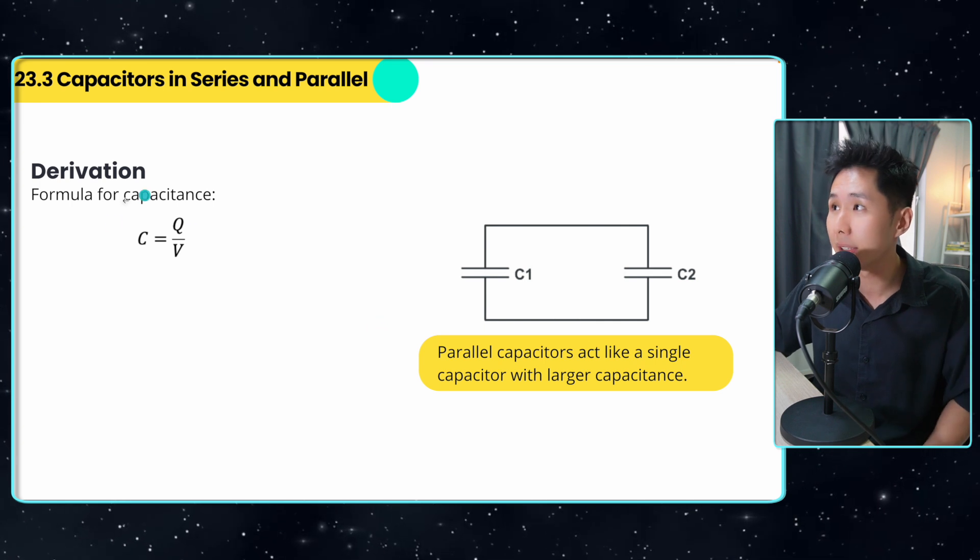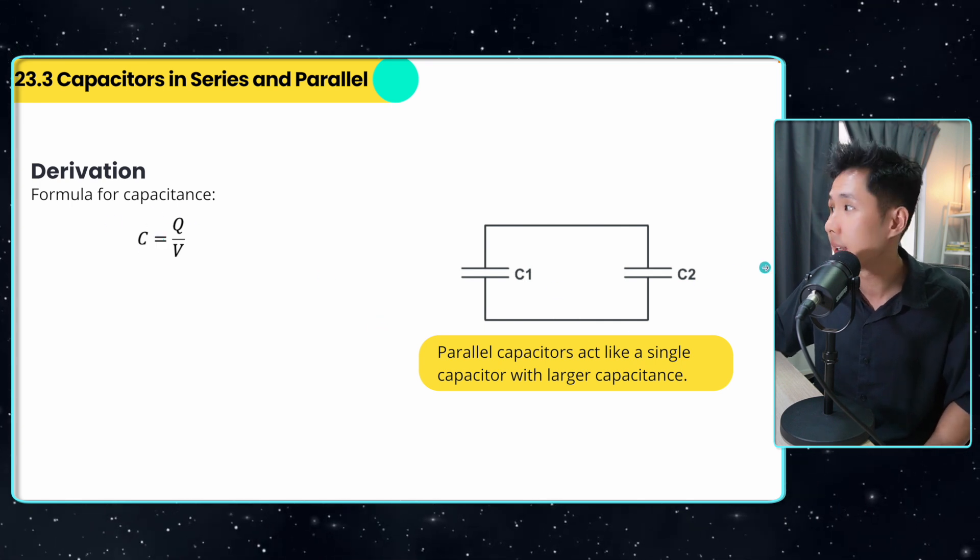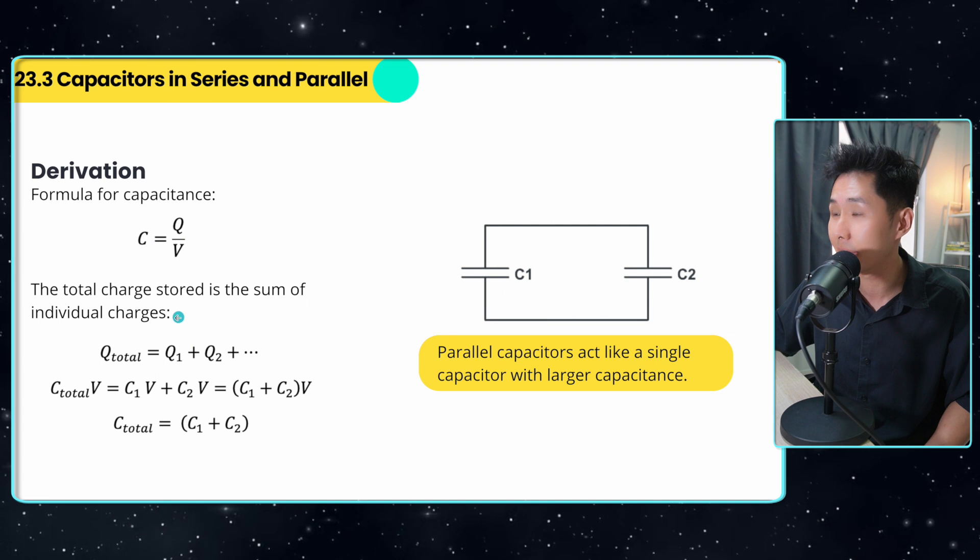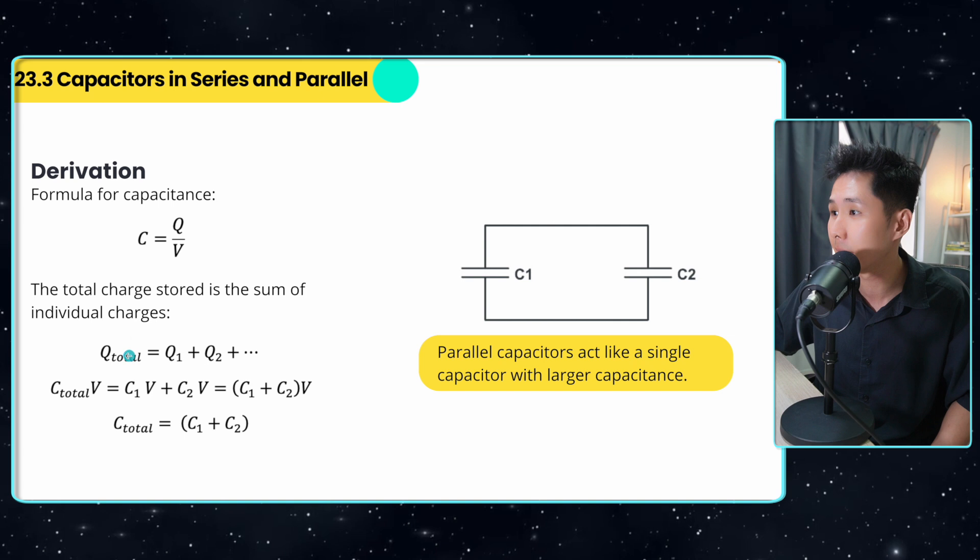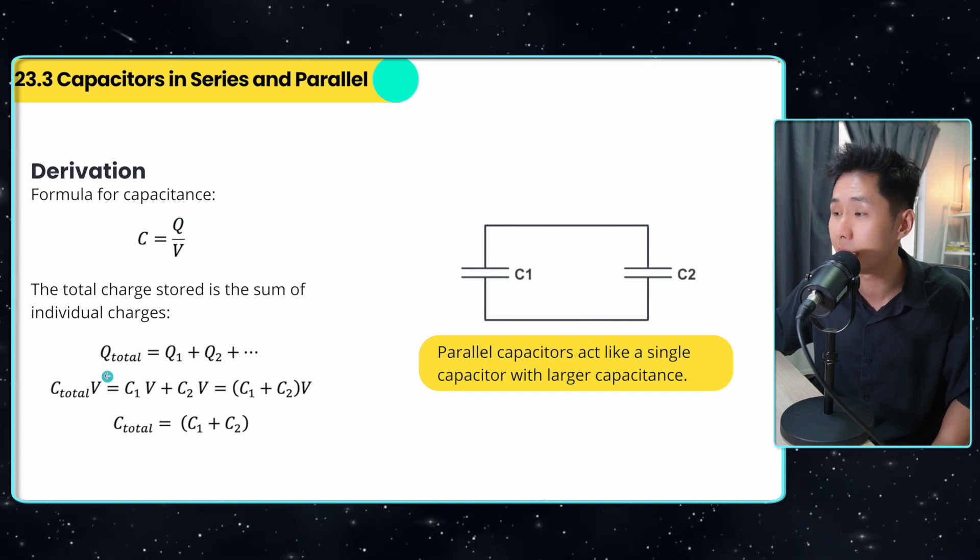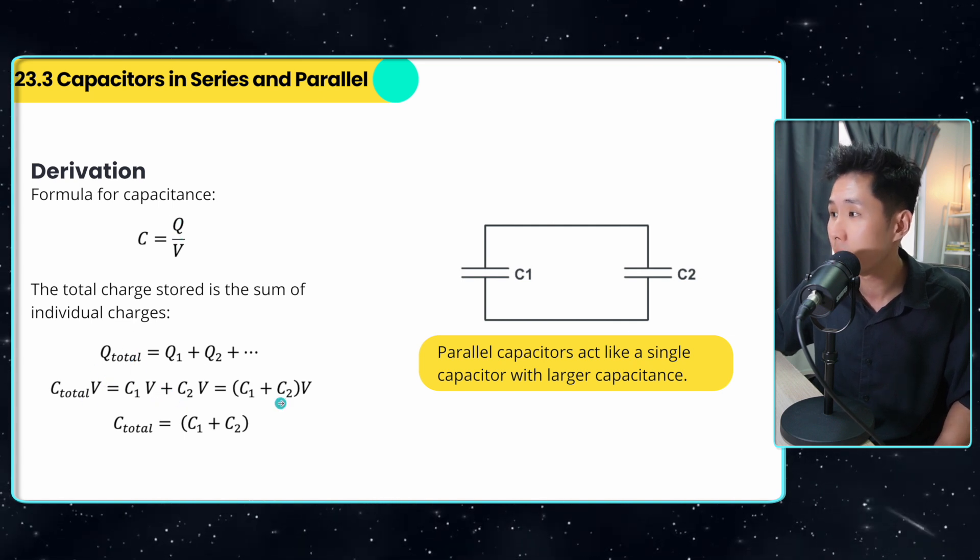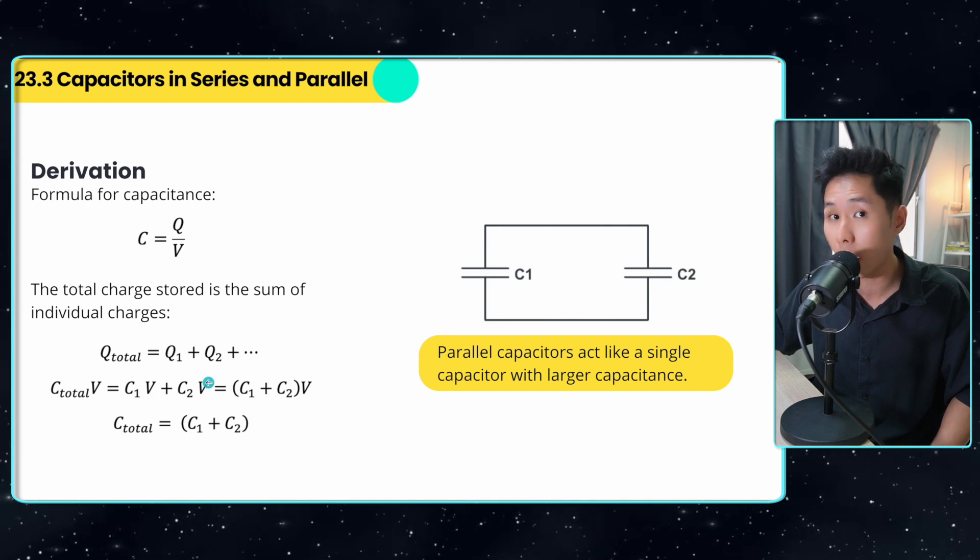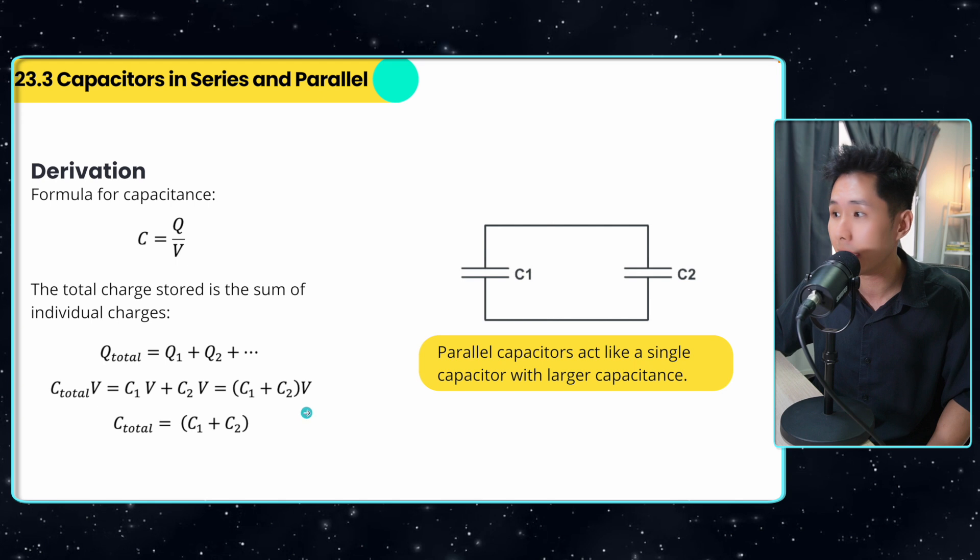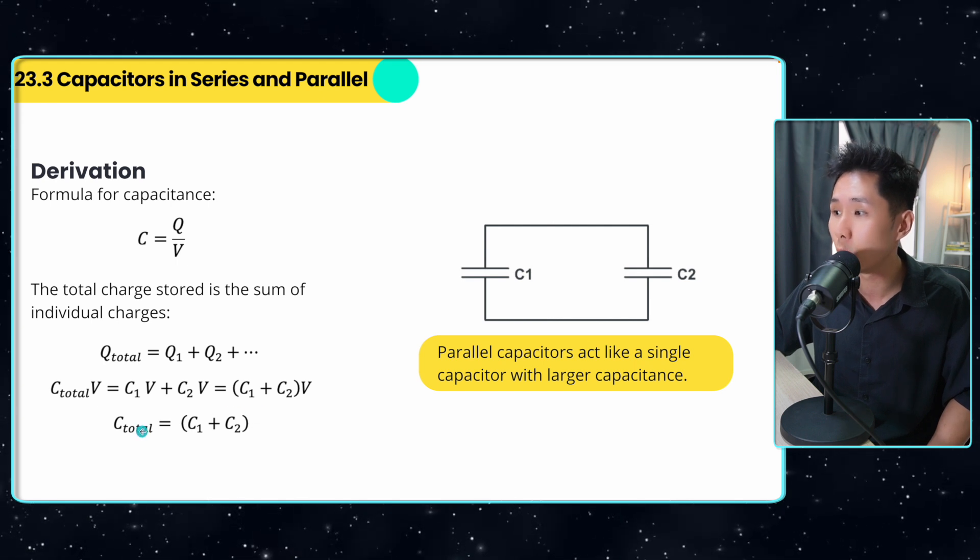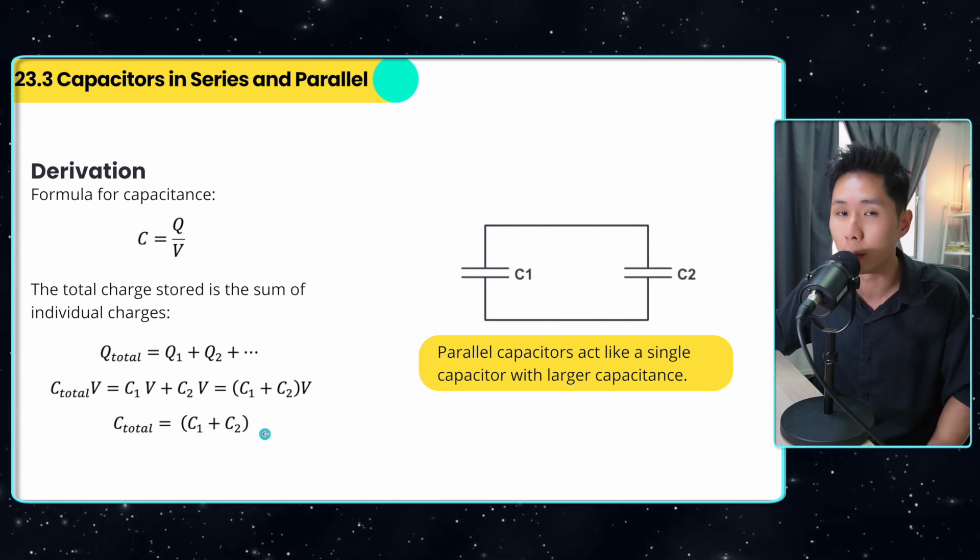So a parallel arrangement behaves like a single larger capacitor and voltage across all capacitors are the same. So to derive the formula, this is the capacitance formula. So we know that voltage will stay the same. And we know that the total charge is the sum of individual charge. So if you were to substitute q equal to CV into this equation, you will add them up. Because V here is the constant, because they are arranged in parallel, you can factorize it, and you will have seen that C total is equal to C1 plus C2, very easy.